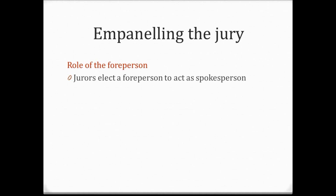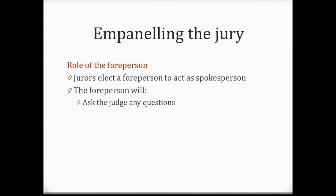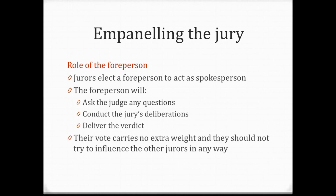When the jury is selected, the members elect one juror to act as foreperson, or spokesperson, for the jury. Their role is to ask the judge any questions the jury may have about the case or points of law, and to conduct deliberations ensuring all members have a chance to voice their opinion and are listened to. The foreperson delivers the verdict to the court — guilty or innocent in a criminal case, or which party they find for and the amount of damages in a civil case. Their vote carries no extra weight, and their role is not to influence jurors either way.